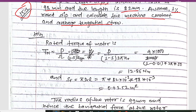The rated torque of the motor is given by the formula T = P / ((1 - s) · 2π · ns). Power is 4 kW, slip is 1% (0.01), and ns is 50 per second. Substituting these values, we get the torque Tn = 12.86 Newton meters.